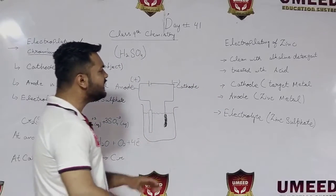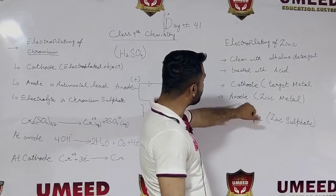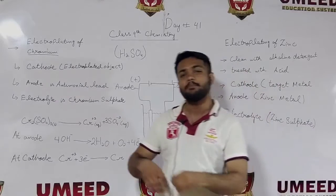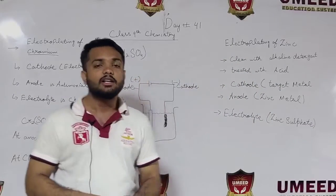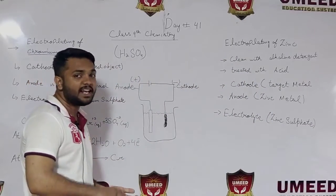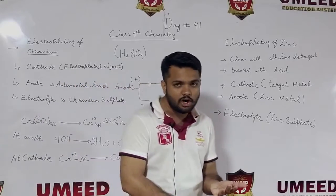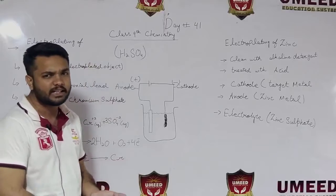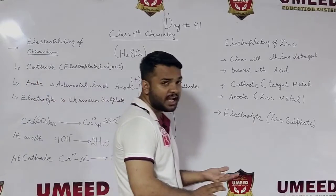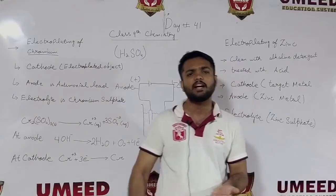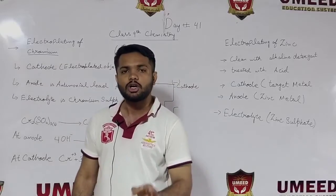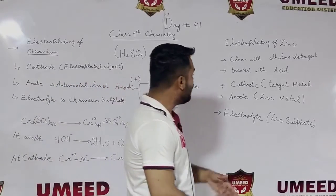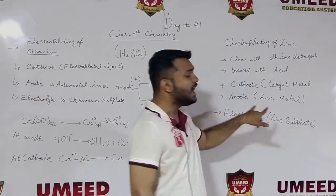There are three conditions for electroplating: the electrode which will always be the target metal - whether iron, silver, or any other material or metal - that will always be your cathode electrode.